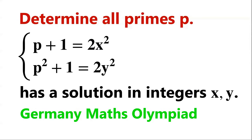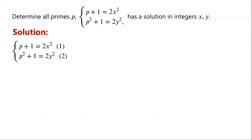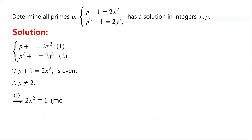Determine all primes p such that the system of equations has a solution in integers x and y. Because p plus 1 equals 2x squared, and 2x squared is even, p plus 1 is even, thus prime p does not equal 2 and it must be odd.